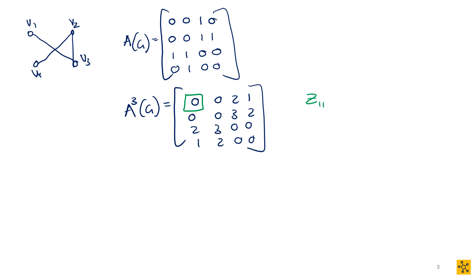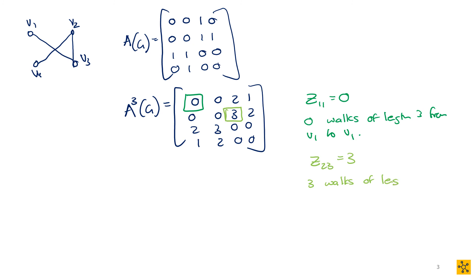Looking at z₁₁ which equals 0: there are zero walks of length three from v1 to v1. Looking at z₂₃ which equals 3: there are three walks of length three from v2 to v3. Let's go and see if we can actually find these walks.